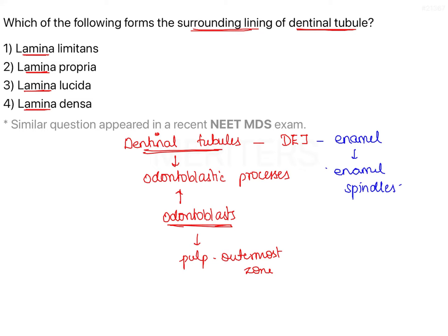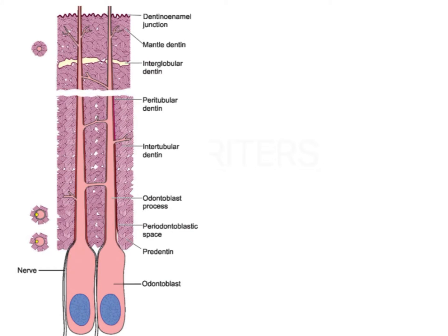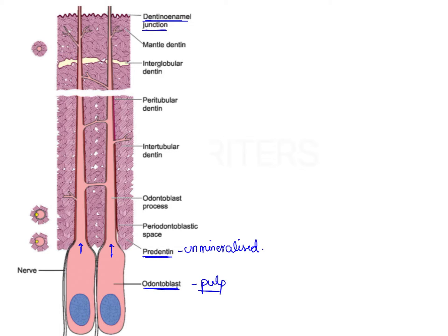Now let's focus on the lining of dentinal tubules. Looking at this picture, we can appreciate the odontoblasts as the outermost layer of the pulp, with cytoplasmic extensions running into the dentin within the dentinal tubules. First the process crosses the pre-dentin, which is an unmineralized layer of dentin, then enters the calcified dentin portion, and extends up to the dentino-enamel junction within the tubules.